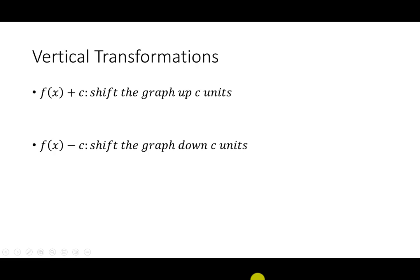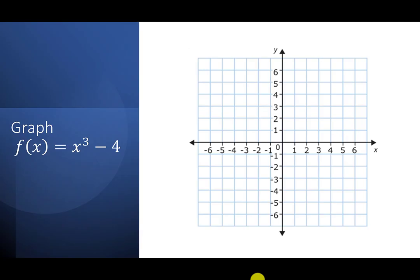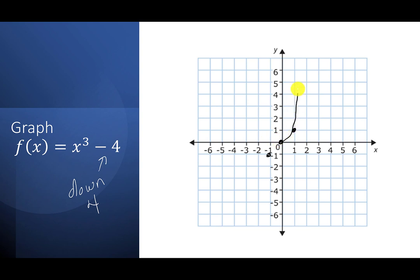Let's look at how we can tell what kind of transformation we have. A vertical transformation looks like f(x) + c or f(x) − c. The plus c shifts the graph up c units; the minus c shifts it down c units. For example, f(x) = x³ − 4: the minus 4 means go down 4. I start with the base function x³, which goes through (0,0), (1,1), and (−1,−1). You should know those points and the shape — it curves up and down.